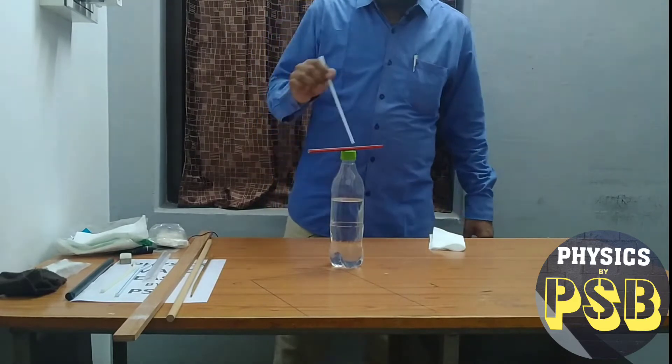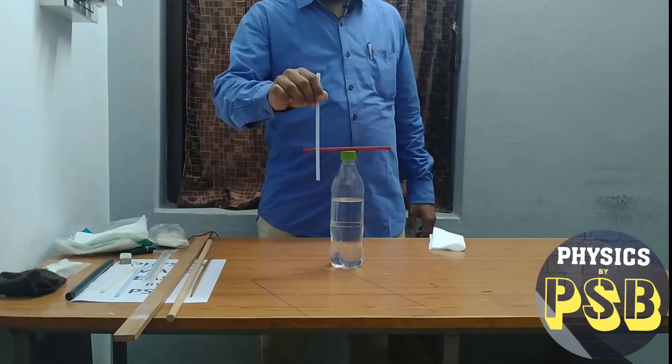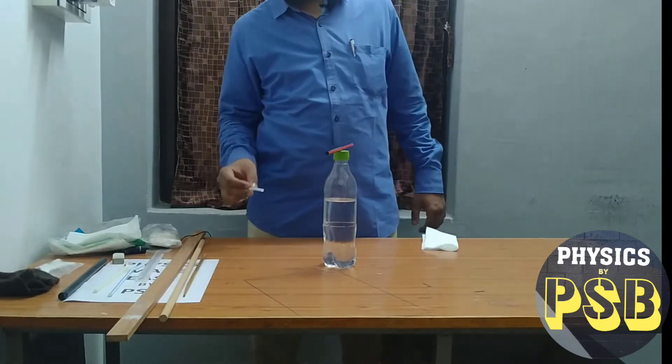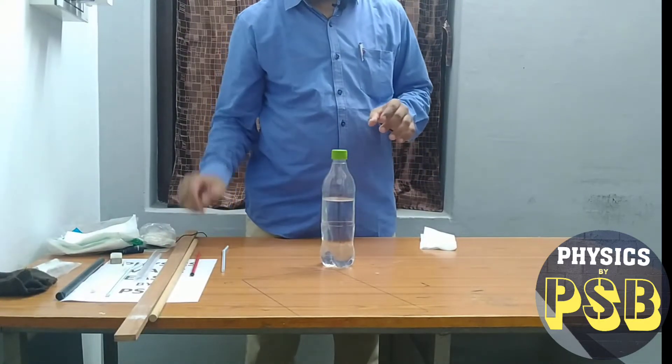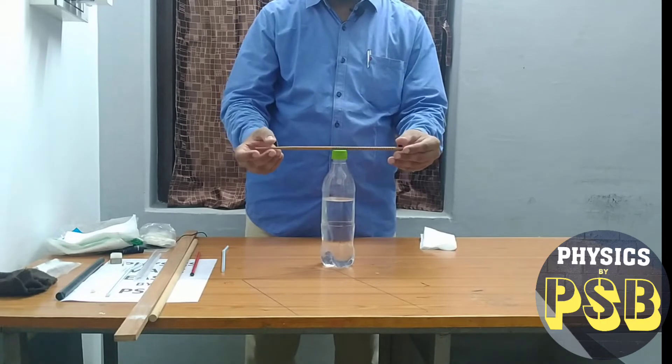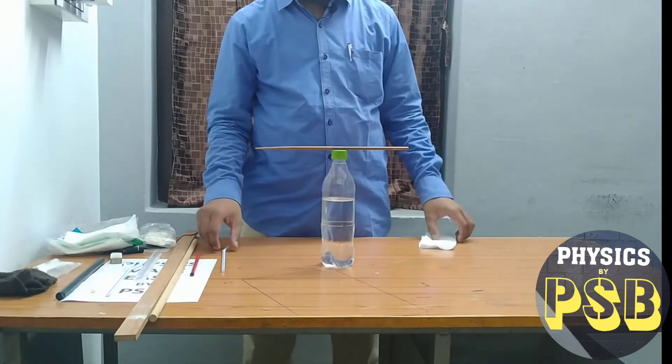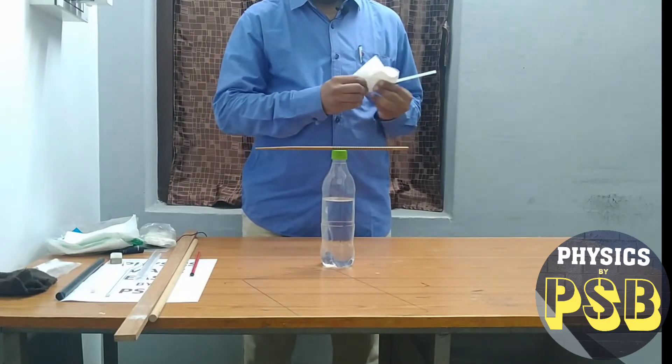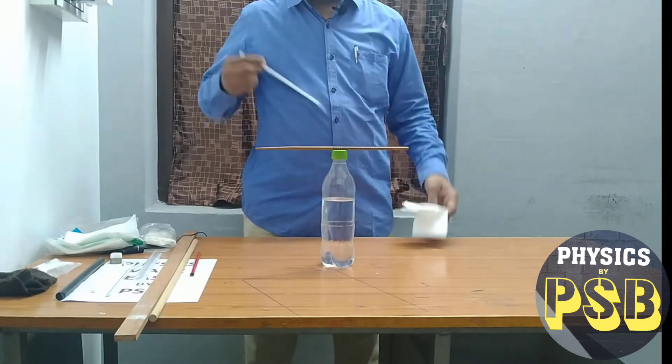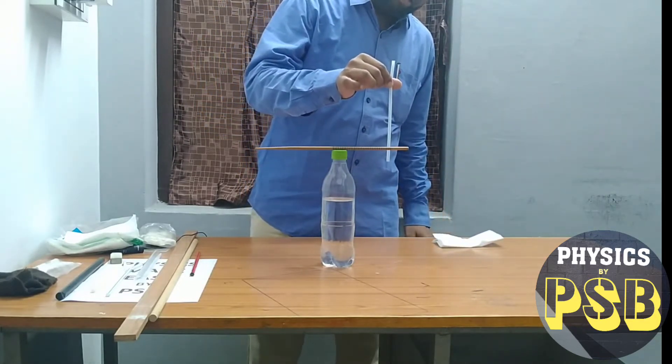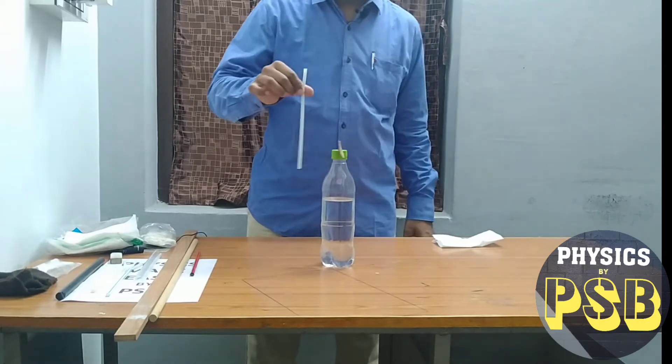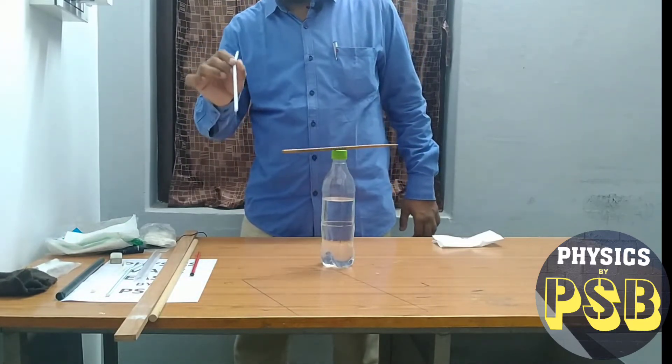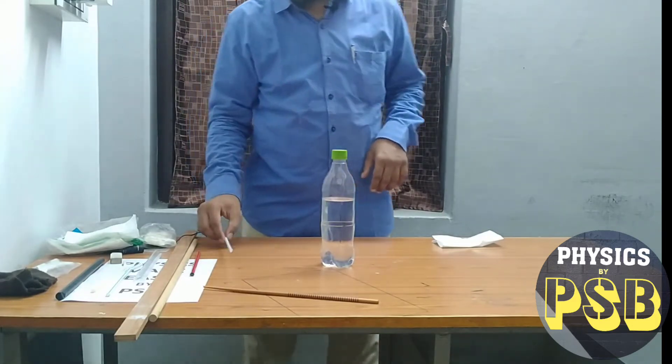Now when I bring this straw near to the pencil you can see it starts moving. That means there is some force acting between the pencil and the straw. Now I replace this pencil with a chopstick. Let's check whether the same thing happens with the chopstick as well. Before that, I'll rub this straw a few times using tissue paper. Now I'll bring it near to this chopstick. You can see, even this chopstick which is larger than the pencil starts moving the similar way. Even here there is a force of attraction between these two which makes this chopstick move.